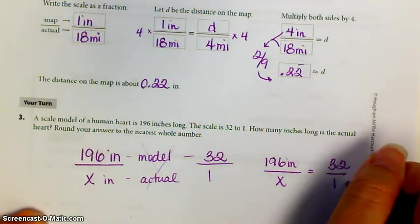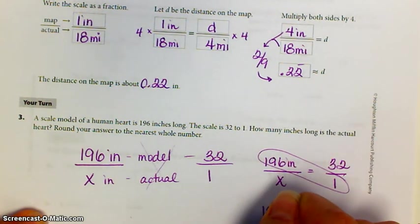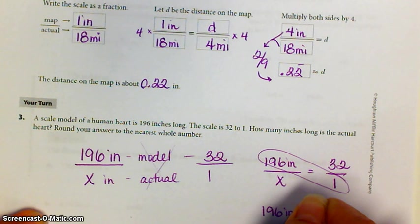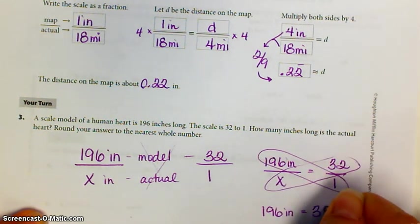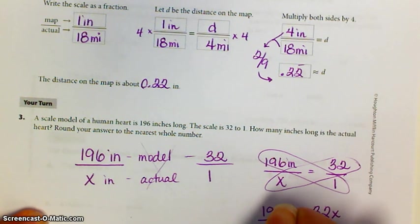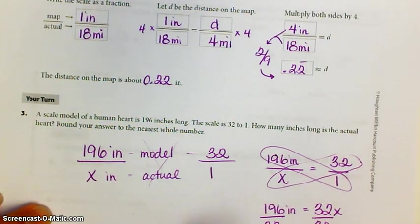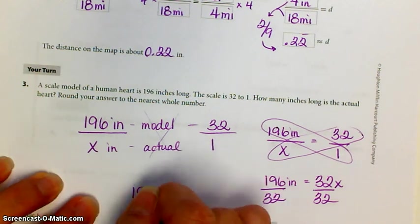I don't know if you guys know cross multiplication. Take those two, multiply those together. Take these two, multiply those together. And then you can solve for x. 196 divided by 32. Divided by 32. I think that's in the ballpark of 6 inches.